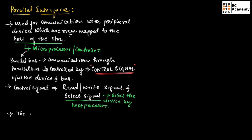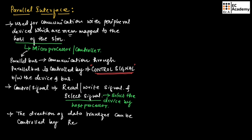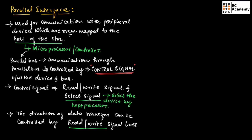The direction of data transfer can be controlled by the read or write signal lines present in the host processor or controller. Only the host processor will have control over the read or write signal lines, so it can decide the direction of data transfer in the system.